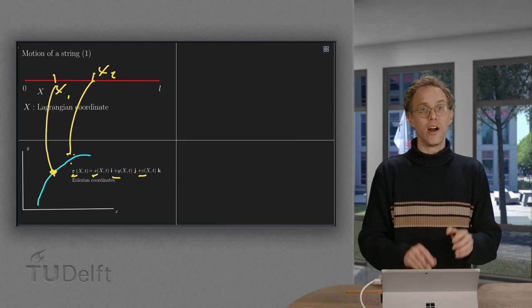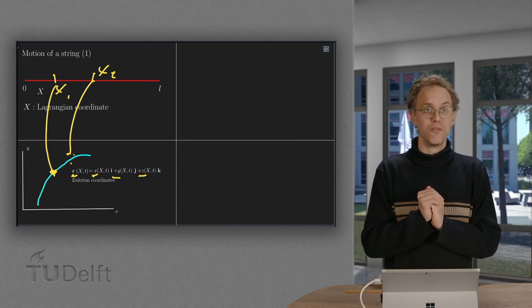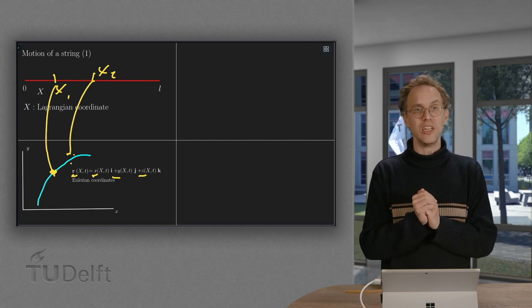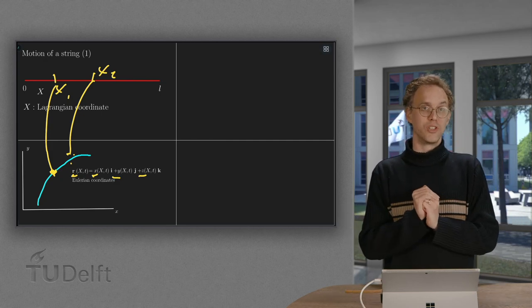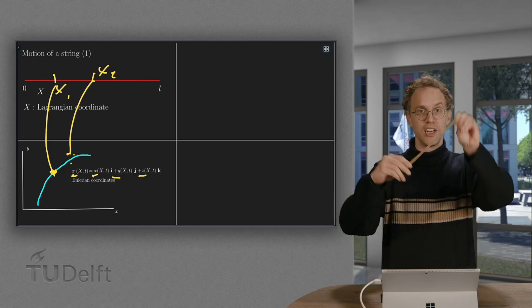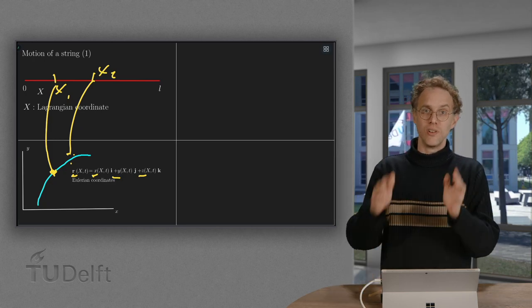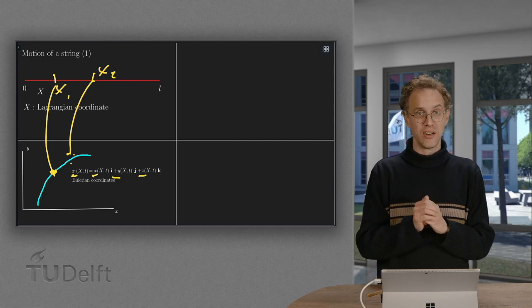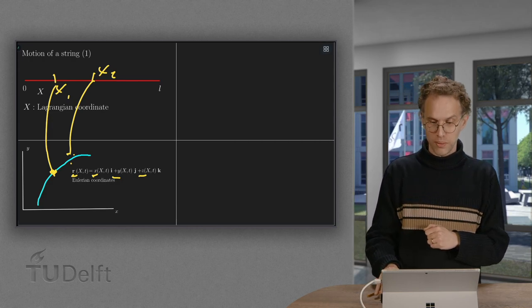So our capital X1 is mapped to some point R of X1 and T. So our goal is to find our function R of capital X and T. If we know this function R, then we know where our string is in space. So that is the end goal. So how do we get there? First, we will do some geometry.